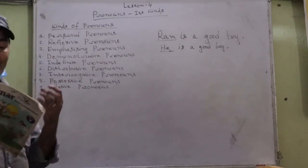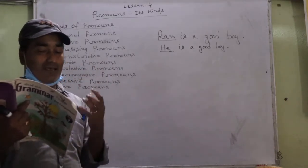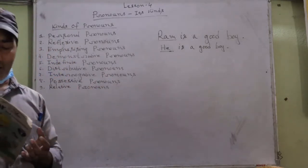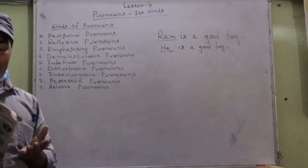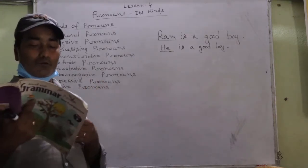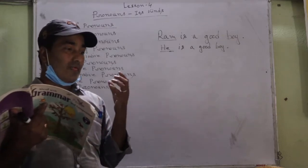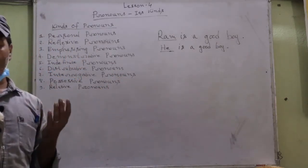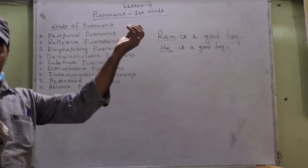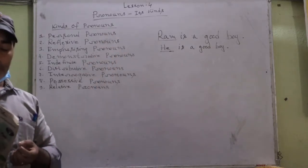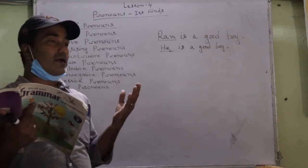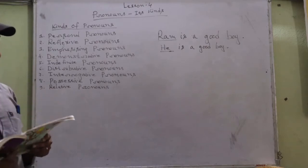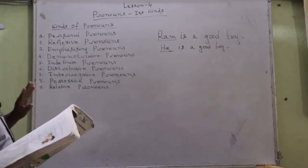Next comes interrogative pronouns. Interrogative means related to asking questions — these pronouns are only used for asking questions, which makes them easy to identify. For example: 'Who told you to wash your feet?' Here 'who' is used as a question. 'Which is your lunch box?' and 'Where are you coming from?' — 'who,' 'which,' and 'where' are examples of interrogative pronouns.